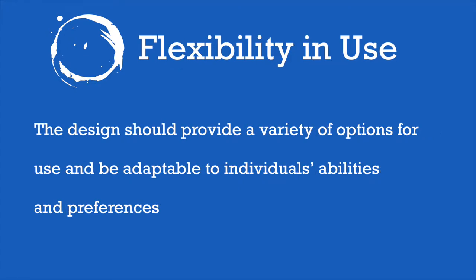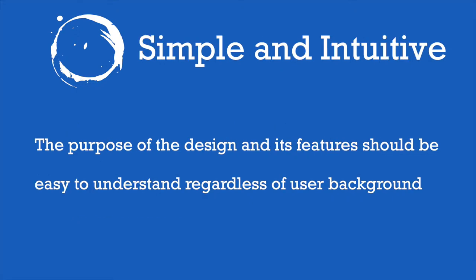The second NDA principle is flexibility in use. The design should provide a variety of options for use and be adaptable to individuals' abilities and preferences. This means that there are optional features as part of the design that might work better for certain people. Imagine yourself at a subway station. When you're getting on the subway train, you might not need a hand bar to help yourself get on the train, but another person might. While this hand bar doesn't affect your experience at all, it may be just what somebody else needs to safely get on the train.